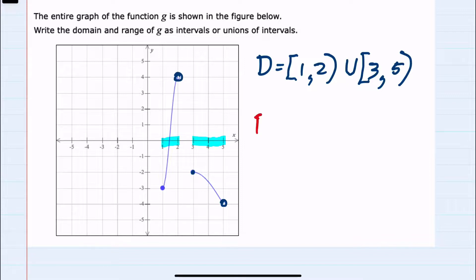When looking for the range we would look at all of the possible y values. And even though we have two pieces, this larger piece here covers these y values. And the smaller piece actually overlaps that covering these values. So when looking for the range the smallest value is going to be out here.